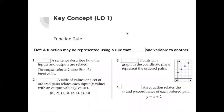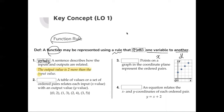Now let's learn about function rule. A function may be represented using a rule that relates one variable to another — x to y. There are four ways to represent this function rule. The first rule is by expressing verbally. We can simply explain it in sentence form, like: the output value is two more than the input value.